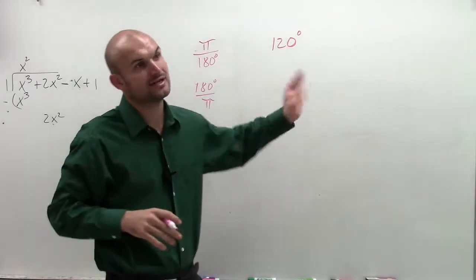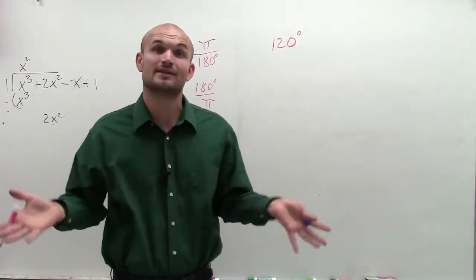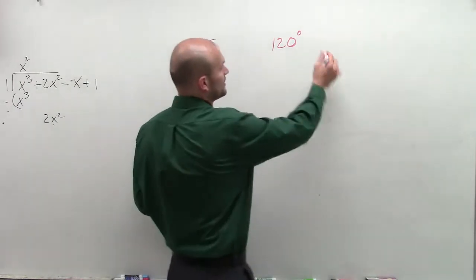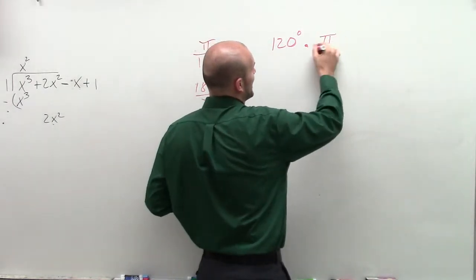Now, when converting from degrees to radians, what we want to do is get rid of the degrees. We just want to keep things in terms of pi in our radian measure. So what I'm going to do is multiply it by pi over 180.